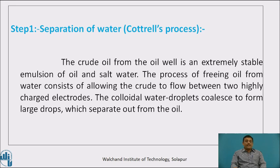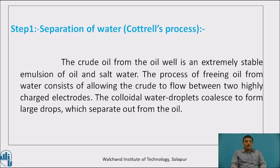Step 1 is the separation of water. The crude oil taken from the earth's crust contains a considerable amount of water and therefore it must be separated first. The crude oil from the oil well is an extremely stable emulsion of oil and salty water. The process of freeing water from the oil is carried out by passing the crude oil between two highly charged electrodes. The colloidal water droplets get separated when the crude oil is passed between the two electrodes.